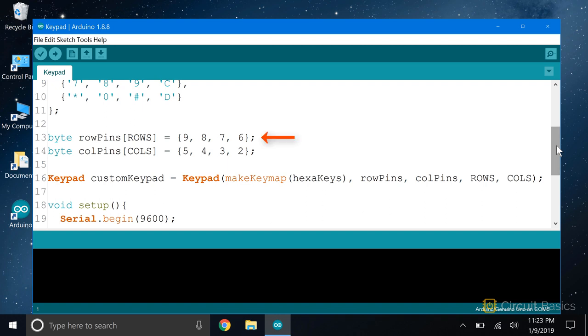Next we define how the row pins are connected to the Arduino. This is where you can change the pin connections if you want to. This is a single-dimensional array. The first element in the array is the Arduino pin that connects to your keypad's R1 pin. The second corresponds to the R2 pin, R3 pin and R4 pin. So here, R1 connects to pin 9, R2 to pin 8, R3 to pin 7, and R4 to pin 6.